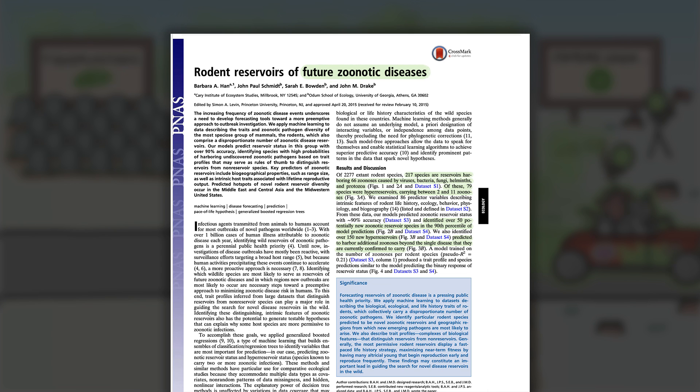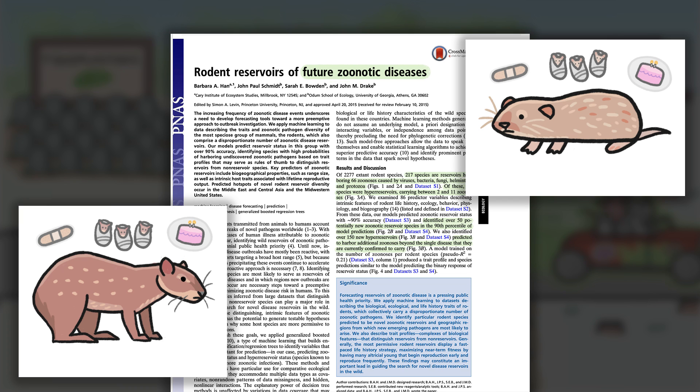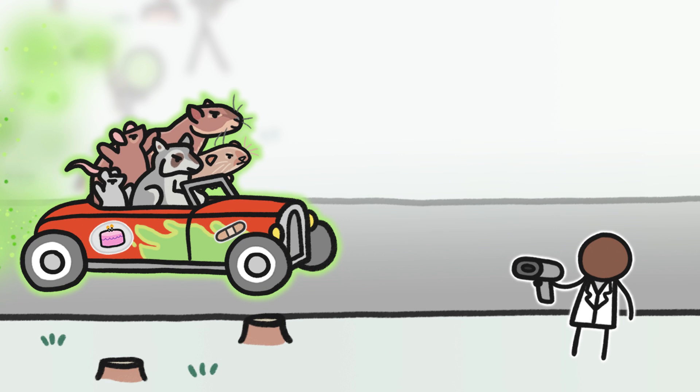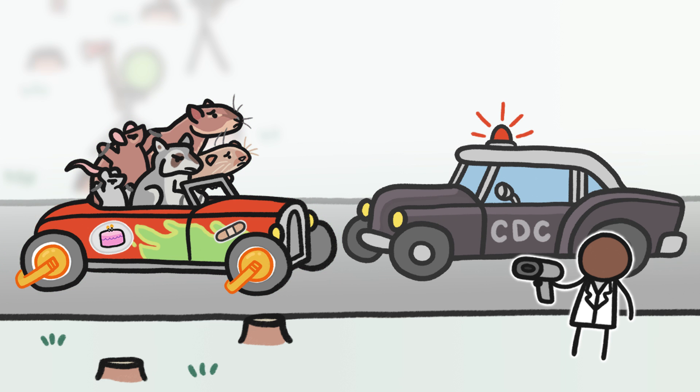In fact, scientists have recently identified several more animals with those same traits, like the narrow-headed vole and the lowland paca, that live in areas where humans are moving in. By keeping an eye on the species most likely to pass on a new disease, we can hopefully put the brakes on the next outbreak.